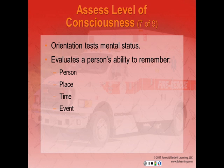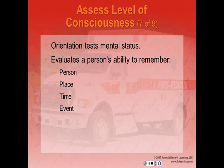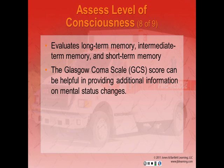Orientation tests evaluate mental status. We want to evaluate a person's ability to remember person, place, time, and event. For person, can they remember their name? Place identifies where they are right now. Time includes the current year, month, and approximate date. Event: can they describe what happened? This evaluates long-term, immediate-term, and shorter-term memory. If the patient knows these facts, they are said to be alert and oriented times four. We can also test painful stimuli through pinching the earlobe, pressing down on the bone above the eye, or pinching the neck muscles.